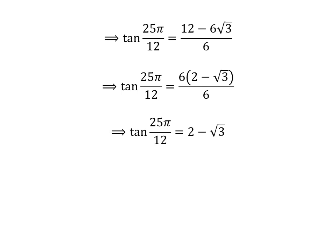Cancelling out the common factor 6 in the numerator and denominator gives us tangent of 25 times pi upon 12 is equal to 2 minus square root of 3.